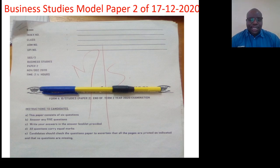Instructions to candidates. The first instruction is that the paper consists of six questions and you are required to answer any five questions. So you have to make a choice. Then instruction number C, you write your answers in the answer booklet provided. Do not bring in materials from outside.